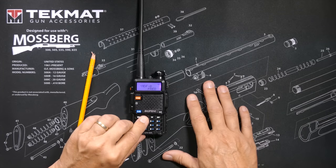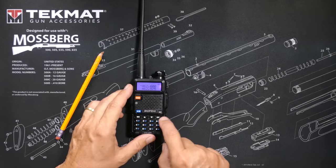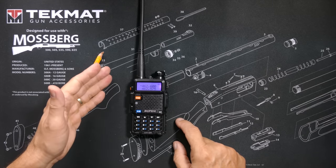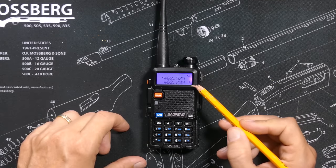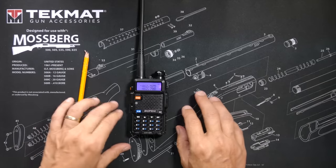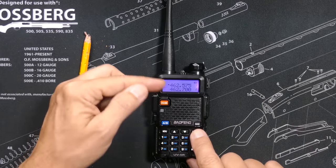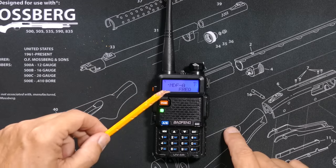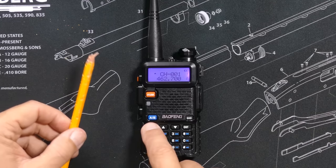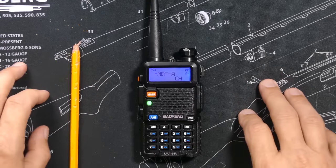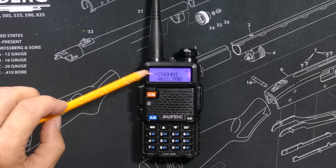Menu options number 21 and 22: MDF-A and MDF-B. These settings apply only when the radio is in channel mode. You can switch between channel mode and VFO or direct frequency mode using the orange button. MDF-A and MDF-B determine what is displayed when you look at those channels — for example, MDF-A can be set to display the frequency, or you can change it to display the channel number. Optionally, if you have entered a name using the Chirp software on your computer — you cannot enter a name directly on the radio, you need a computer for that — you can display that name as well.